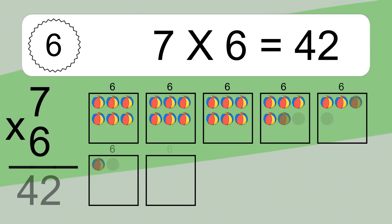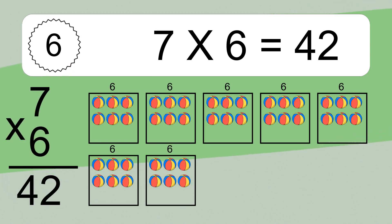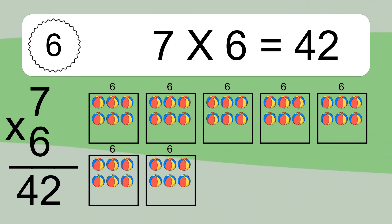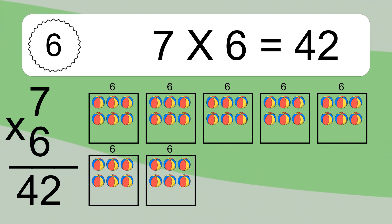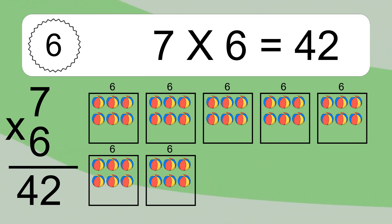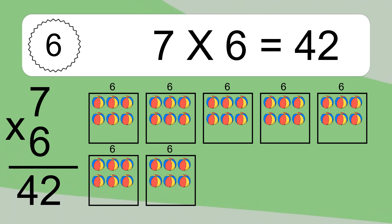Seven times six equals what? Seven times six equals 42. We have seven boxes and each box has six colorful balls inside. If you count all the balls in all the boxes together, you will have seven times six balls. This equals 42 balls.